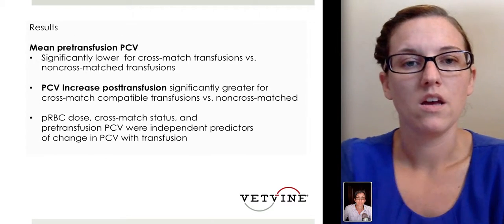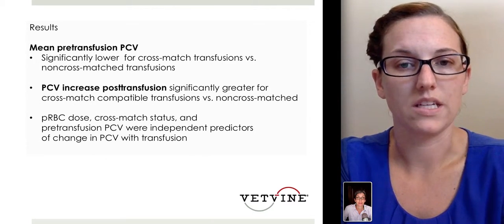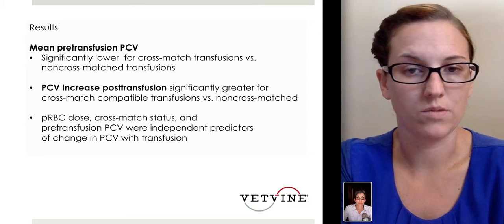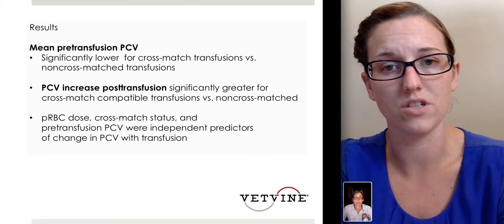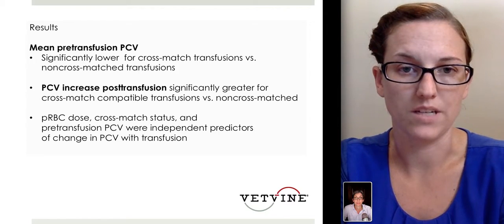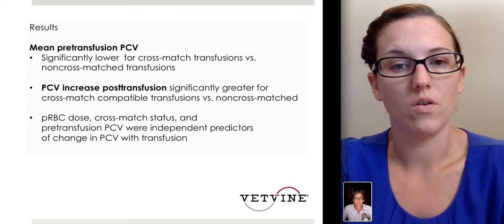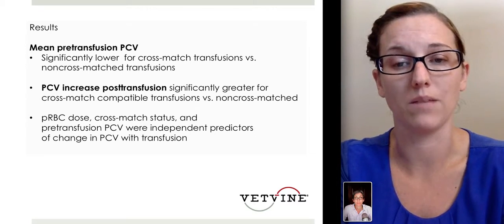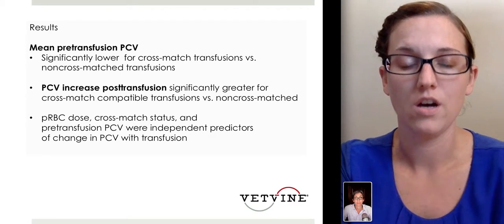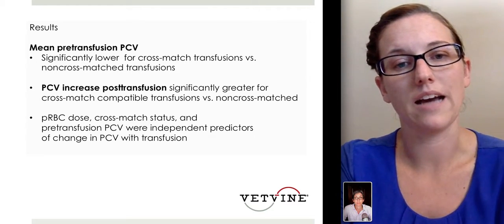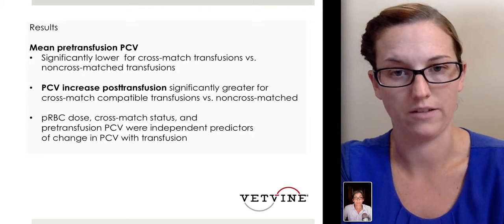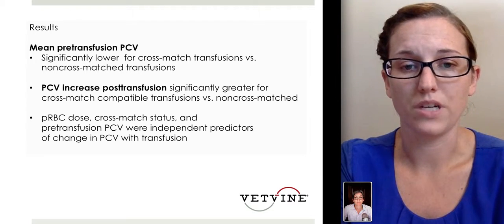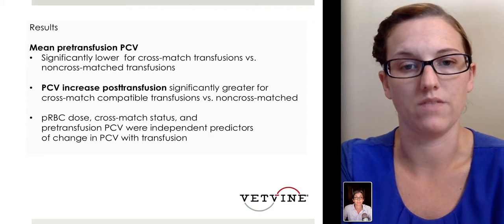The results showed that the mean pre-transfusion PCV was significantly lower for cross-match transfusions compared to the non-cross-match group, which makes sense — those cats selected for cross-matching were likely the more severely affected patients. The post-transfusion PCV was significantly greater for the cross-match compatible transfusions. Interestingly, the packed red blood cell dose, the cross-match status, and the pre-transfusion PCV were all independent predictors of the change in PCV.